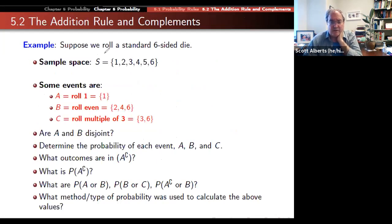We can list all of the different outcomes. We can calculate the probability we roll a one, that's one sixth. The probability we roll an even number is three out of six. The probability we roll a multiple of three, that's a three or a six, that's a third.